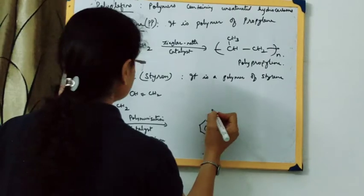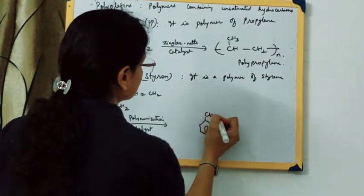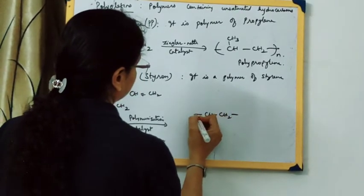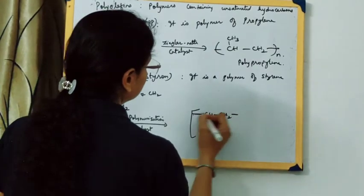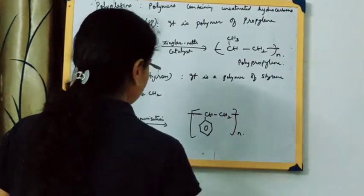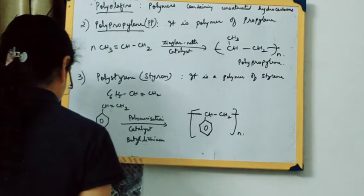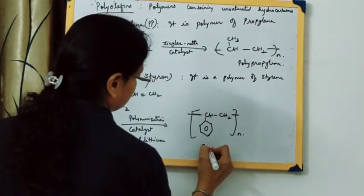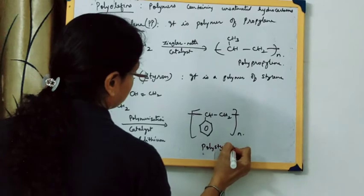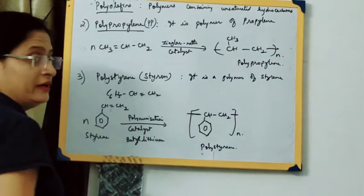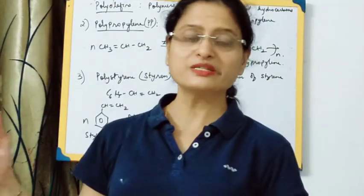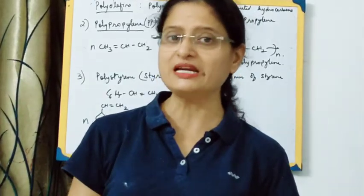The product is polystyrene — (CH₂–CH(C₆H₅))ₙ. The details of specific catalyst conditions aren't always required; you just need to know this equation. So that was polystyrene.